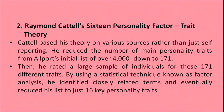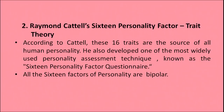Next is Raymond Cattell's 16 personality factor, another trait theory. Cattell based his theory on various sources rather than just self-reporting. He reduced the number of main personality traits from Allport's initial list of 4000, which he reduced to 171. Then he rated a large number of individuals for these 171 different traits. By using a statistical technique known as factor analysis, he identified closely related terms and eventually reduced his list to just 16 key personality traits. According to Cattell, these 16 traits are the source of all human personality. He also developed one of the most widely used personality assessment techniques known as the 16 Personality Factor Questionnaire.